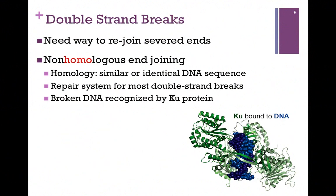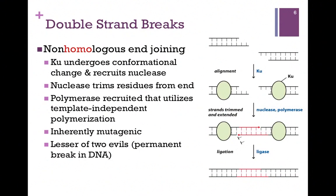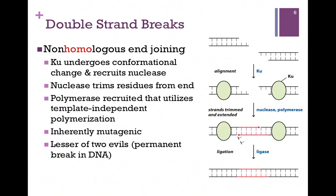The broken DNA is recognized by Ku protein, and we have a crystal structure at the bottom right of Ku protein in green binding to the DNA in blue and purple. In non-homologous end joining, Ku protein binds to each broken segment, and that conformational change recruits a nuclease. The nuclease trims the ends to produce a longer region of single-stranded DNA, which then recruits a DNA polymerase. This is a special polymerase because it can polymerize DNA without a template — template-independent polymerization. Because there's nothing to direct proper incorporation of nucleotides, this process is inherently mutagenic.